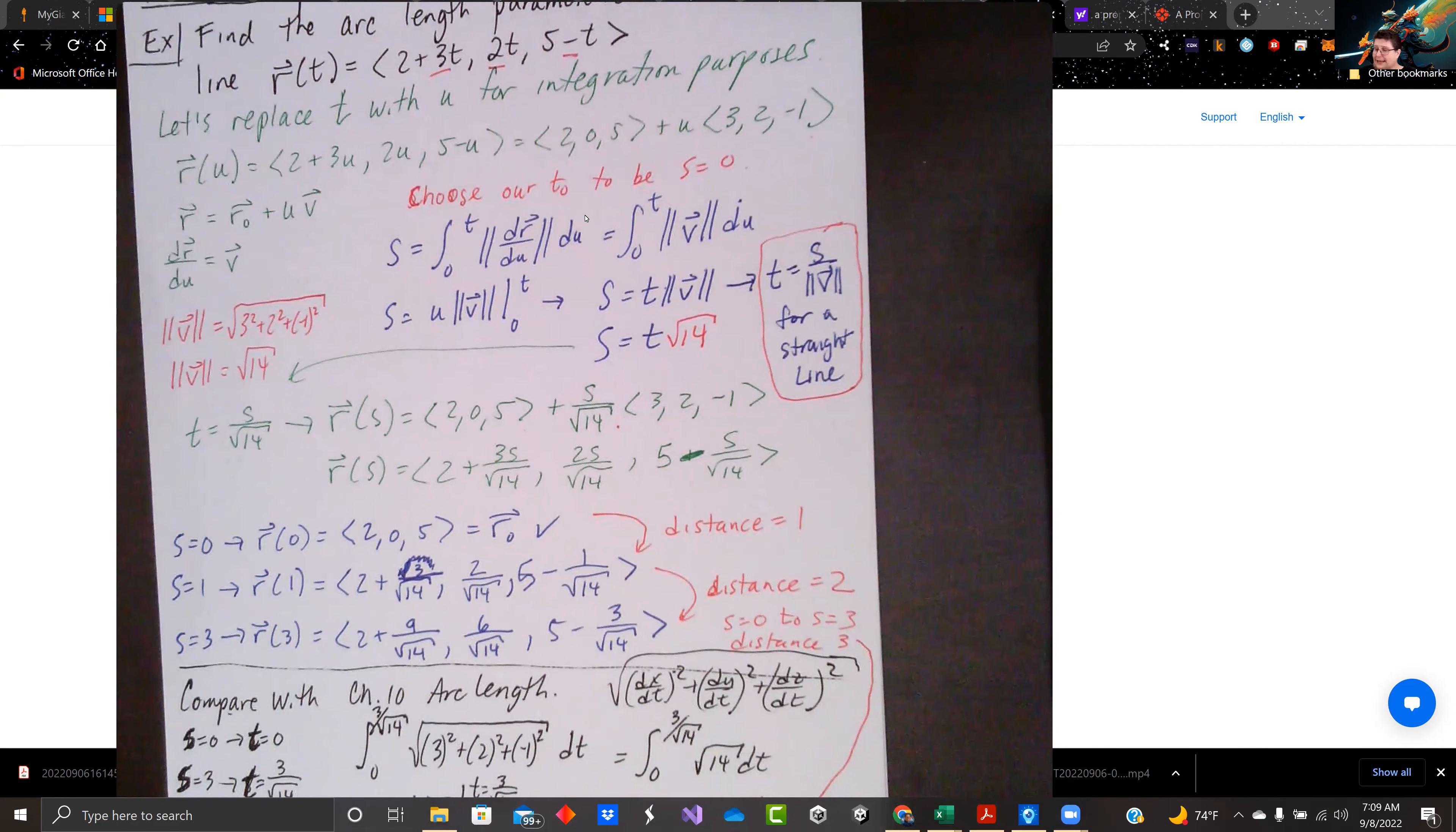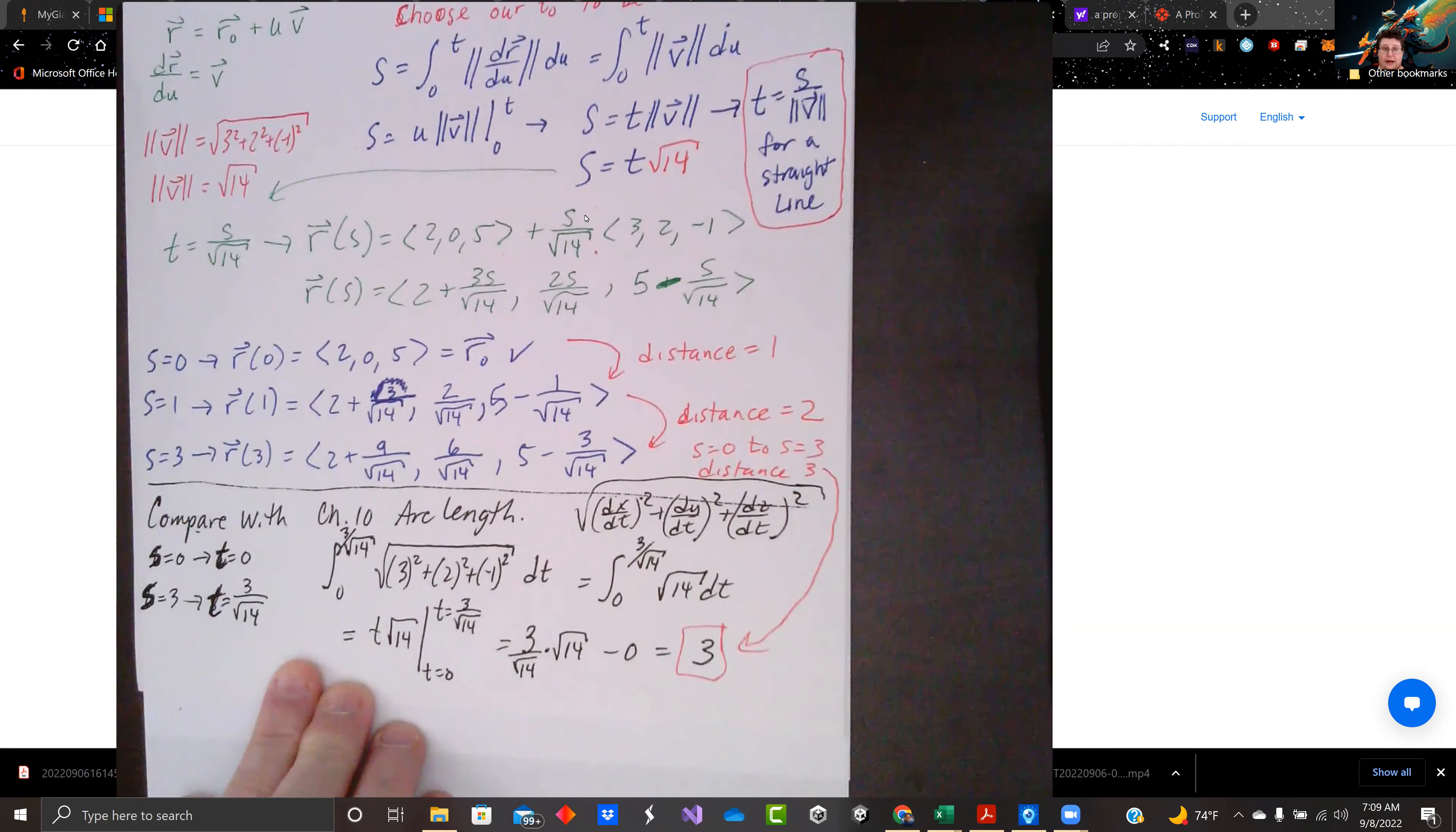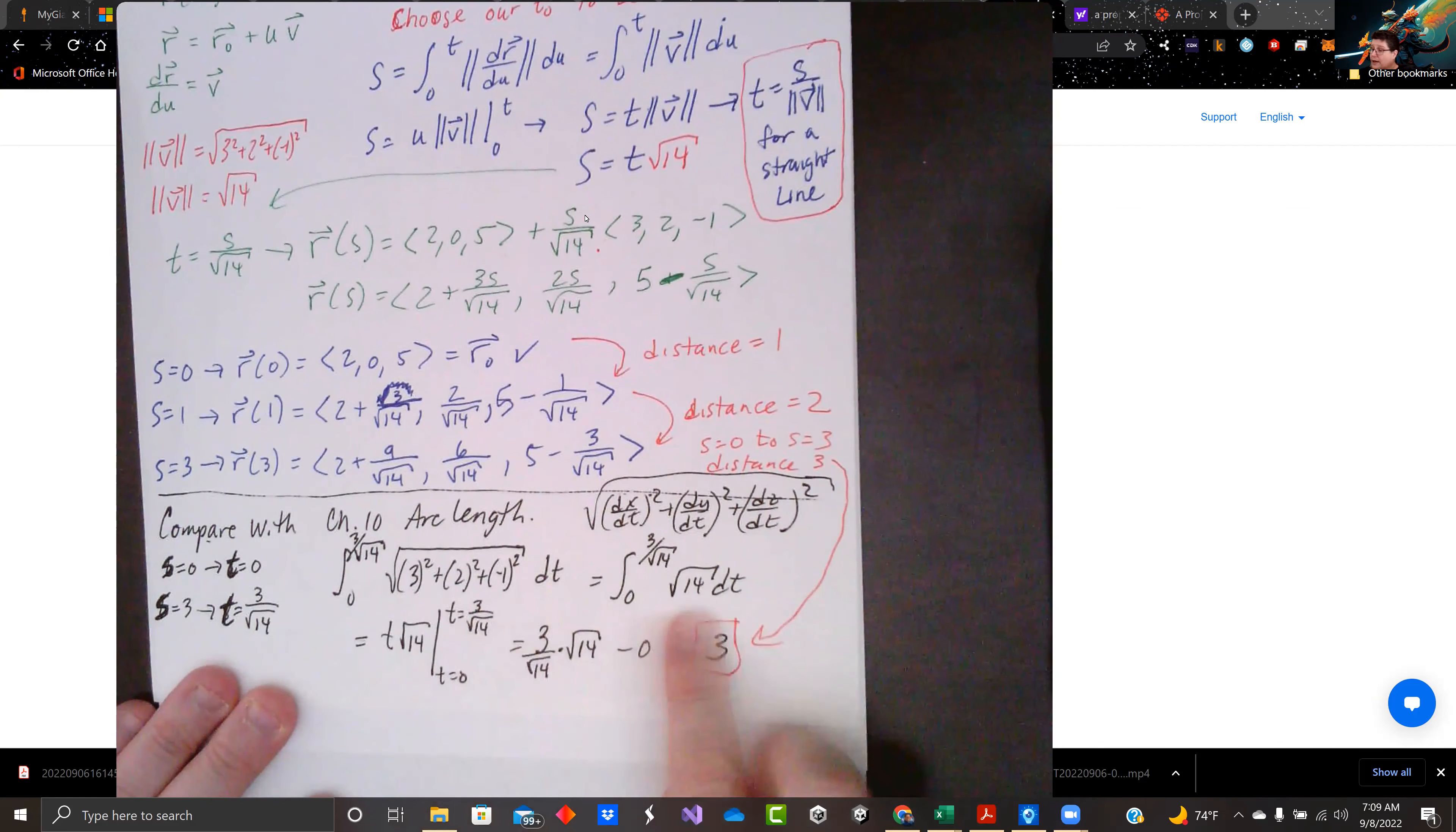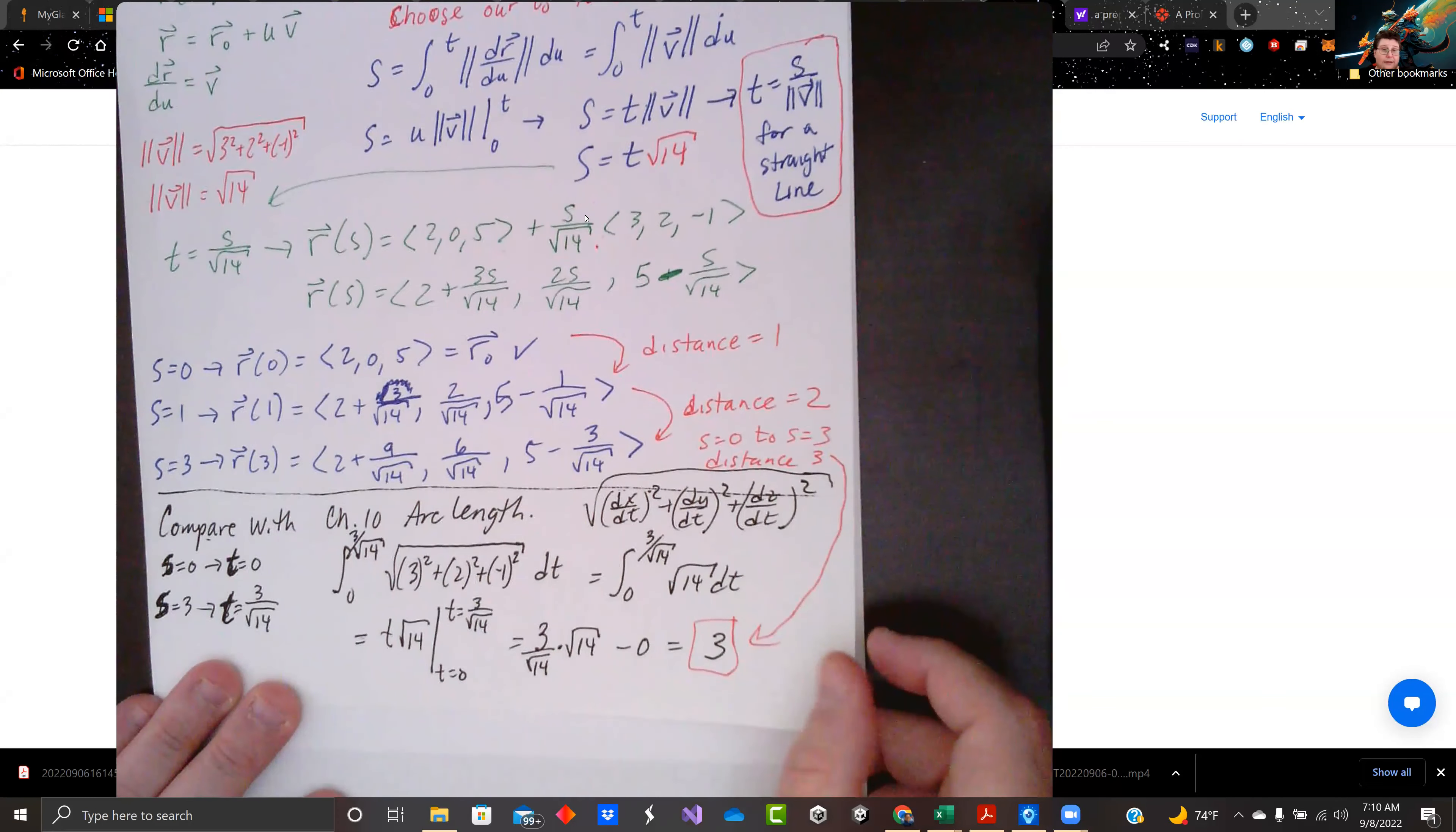If we compare that with arc length in chapter 10, we're just doing the arc length regularly. We know that s equals 0 was t equals 0. And s equals 3 gives us t equals 3 over root 14. We integrate along that. We still have our dr/dt. It's still the same. So we got root 14. We integrate it. We got t times root 14 evaluated from t equals 0 to t equals 3 over root 14. You'll see we get three steps. So I guess you don't really need to take my word on it. You can always test it and show that the arc length is the value for it.